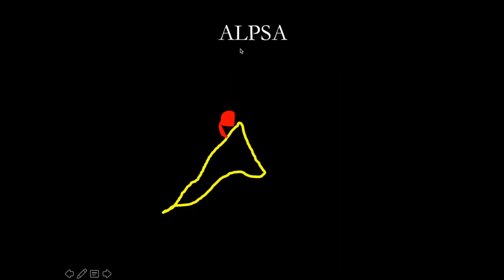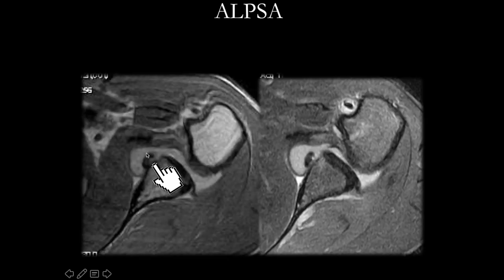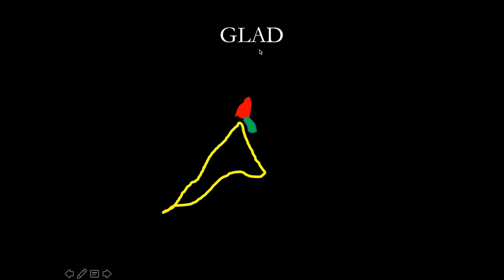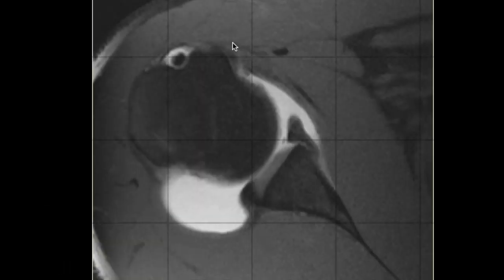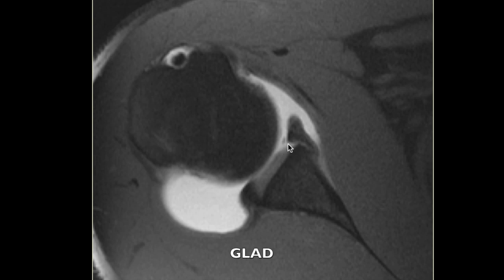ALPSA — anterior labral periosteal sleeve avulsion — is a condition in which the labrum is torn, the periosteum is still intact, and the labrum gets bunched up, displaced inferiorly and medially like a rolled-up shirt sleeve. Here is an example: the torn anterior inferior labrum has been displaced medially and inferiorly. GLAD — glenoid labral articular disruption — is a condition where you see a tear of the labrum and a piece of the adjoining glenoid cartilage has also come off along with it.